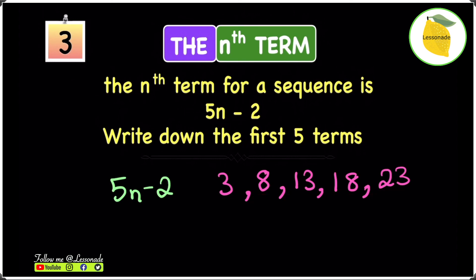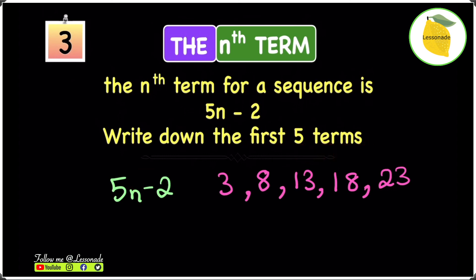In this question, to find the first five terms we substituted 1, 2, 3, 4, and 5 for n into the formula. If it were the first 10 terms, you would write 1 through 10 and substitute all 10 values into n to find your answer.